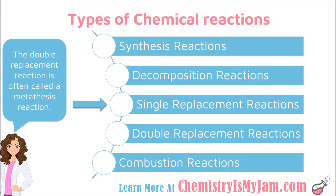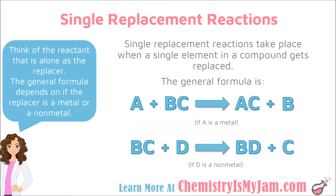Let's continue our discussion of chemical reactions by looking at single replacement reactions. A single replacement reaction takes place when a single element in a compound gets replaced. An element by itself reacts with a compound, and that element is going to replace something in the compound. The element that was by itself in the reactants is now part of the compound in the products.